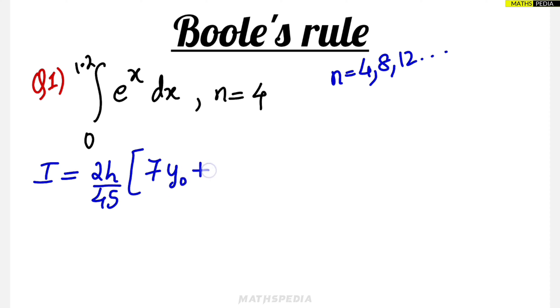7y₀, which is the first value, then 32y₁ plus 12y₂ plus 32y₃ plus 7y₄ and so on. This is the basic formula for Boole's rule.